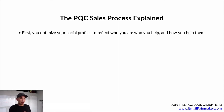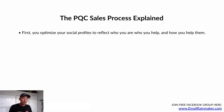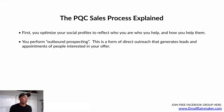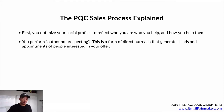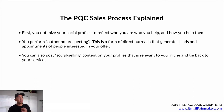Let's break it down in more detail. First, you're going to optimize your social profiles — wherever your clients are hanging out — to reflect who you are, who you help, and how you help them. Whenever a prospect lands on your Facebook, LinkedIn, or Instagram, they should immediately know exactly who you are and what your service offering is. Then you're going to perform outbound prospecting — direct outreach that generates leads and appointments of people who are interested and a good fit for email copywriting.